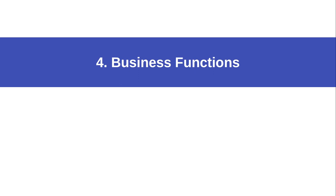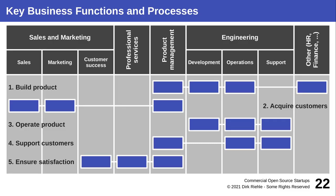Let's turn to the inner workings of a software vendor. There are key business functions every company needs to execute well. You need to be good at building a quality product that meets expectations, acquiring customers, selling your product, operating the product if it's in the cloud, supporting customers, and ensuring satisfaction through so-called customer success. Different organizational units of the vendor are in play for each of these.